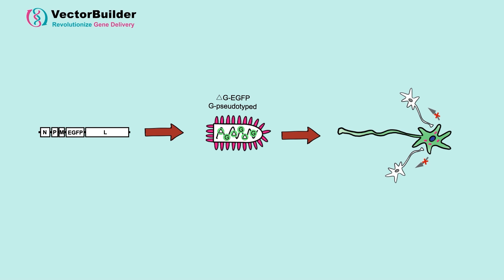But that doesn't really help us decipher that network. If we give that initially infected neuron or primary neuron the G protein, it can gift it to the newly formed rabies virus. We can use an AAV to introduce the G gene in trans to our primary neuron.